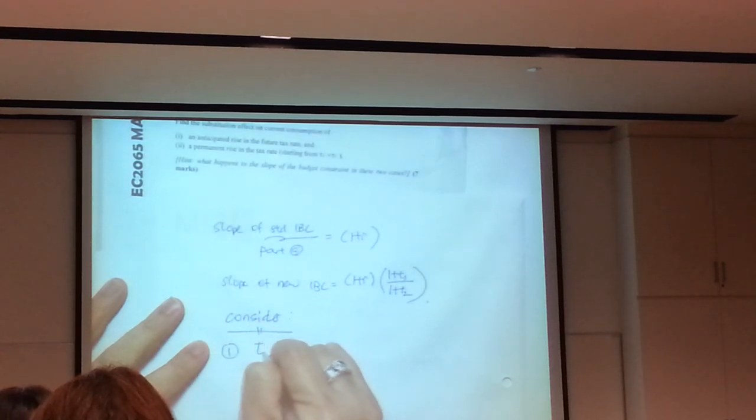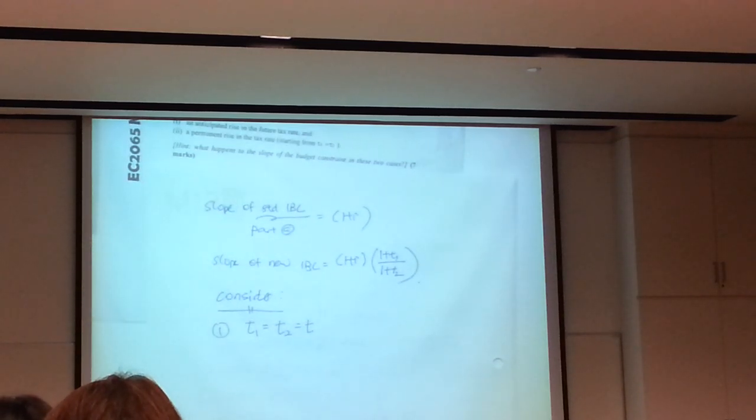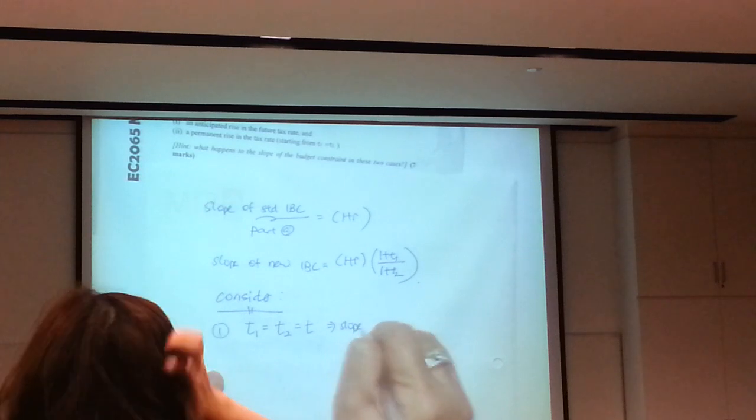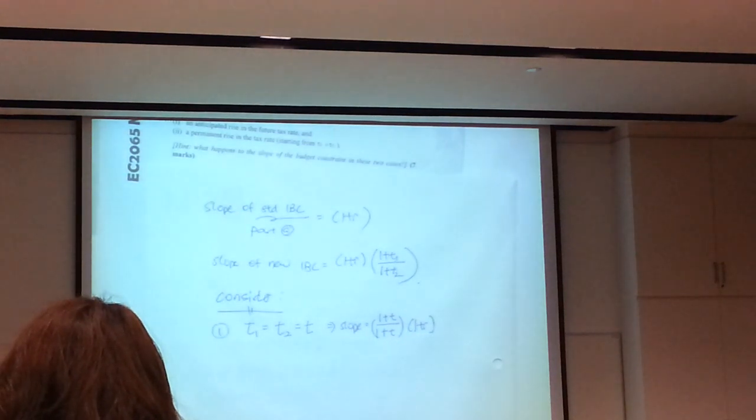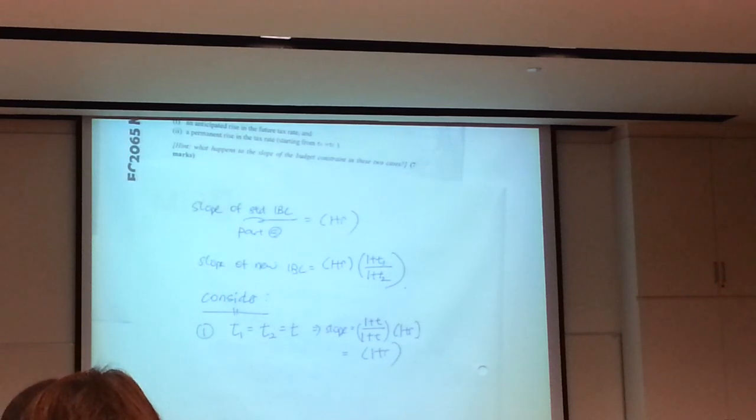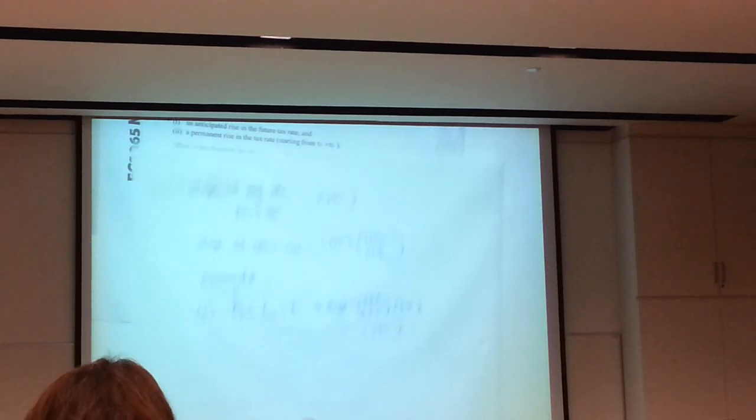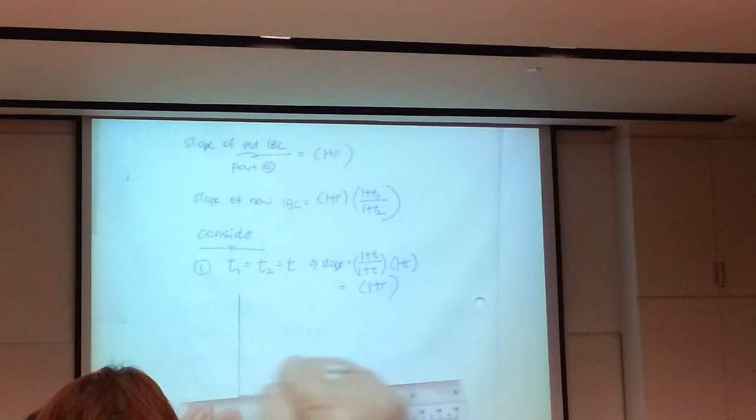So you will get C2 equals to Y1 times 1 plus R plus Y2 over 1 plus T2. This is your intercept. Then minus 1 plus T1, 1 plus T2, 1 plus R, C1. So this is your vertical intercept. This is your slope. So like I say, both methods are the same.